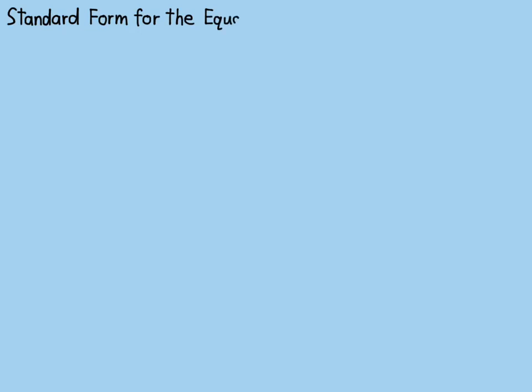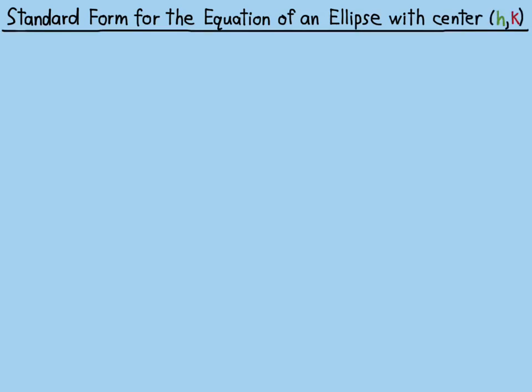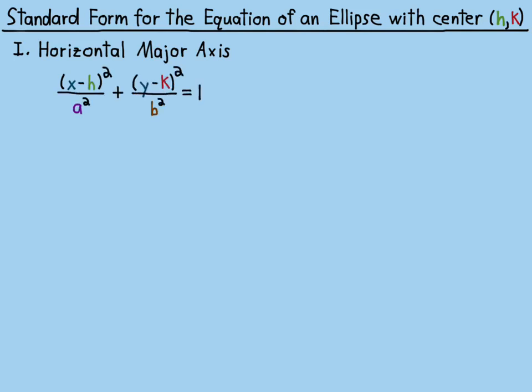The standard form for the equation of an ellipse with center (h, k) is one of the following two equations. First, the ellipse with the horizontal major axis: (x - h)² / a² + (y - k)² / b² = 1.